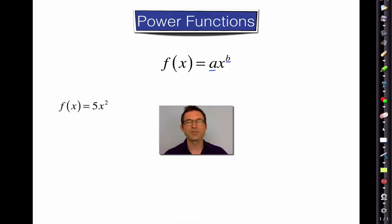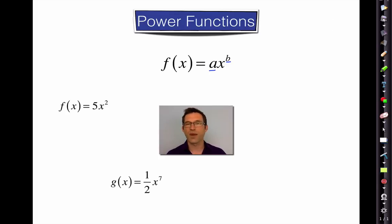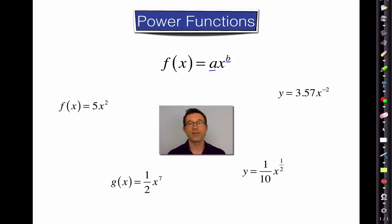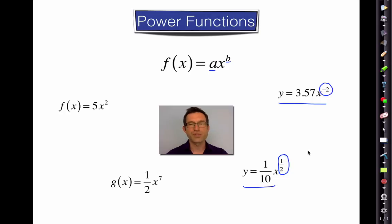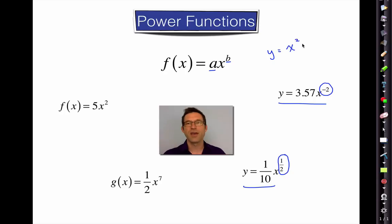For instance, we could have something simple like f(x) = 5x², which we graph as a parabola. We could have g(x) = (1/2)x⁷ — nothing wrong with a being a rational number. We could have y = 3.57x⁻², or y = (1/10)x^(1/2). Negative exponents indicate division and fractional exponents indicate roots. A power function has only one term — something like x² + 3x is not a power function because it has two terms.